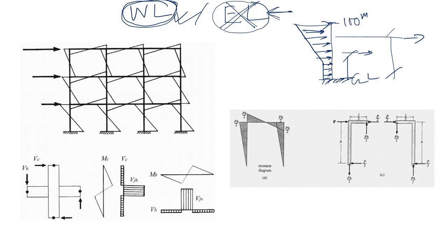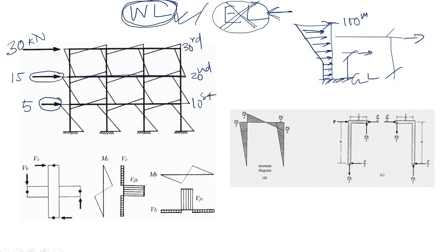So at the very first floor the wind load magnitude is, say, 5 kilonewtons. At the second floor it is higher. Let's say this is the 10th floor, the 20th floor, and the 30th floor. At the 10th floor it is 5 kilonewtons, at the 20th floor it is 15 kilonewtons, and at the 30th floor it is almost 30 kilonewtons. So the lateral load varies with height.